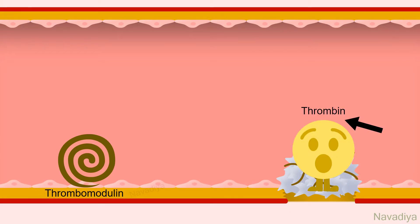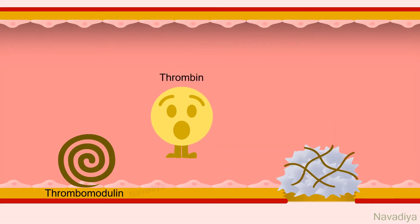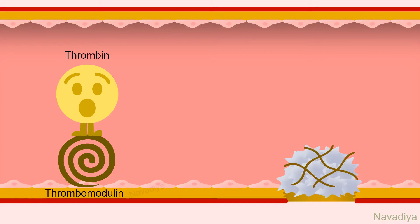We have seen in the video on coagulation that thrombin is a pro-coagulant factor, and it activates other pro-coagulant factors like fibrinogen, factor 5, 8, and 13 in the coagulation cascade. But if thrombin leaves the damaged area, thrombomodulin modulates its function.